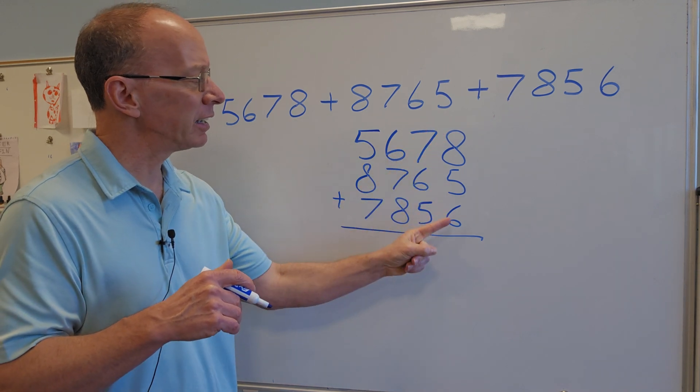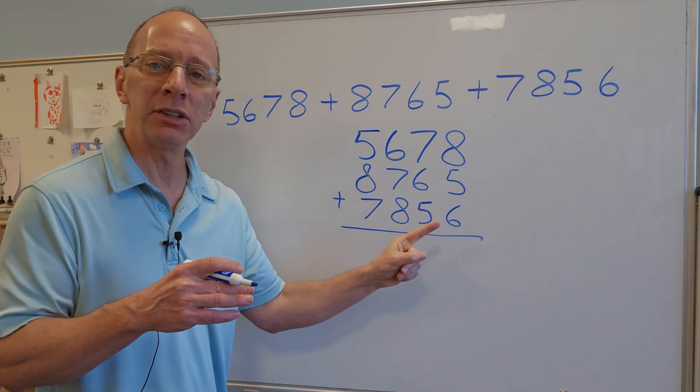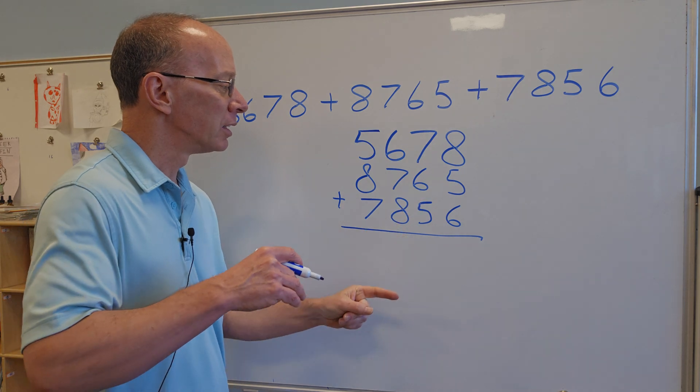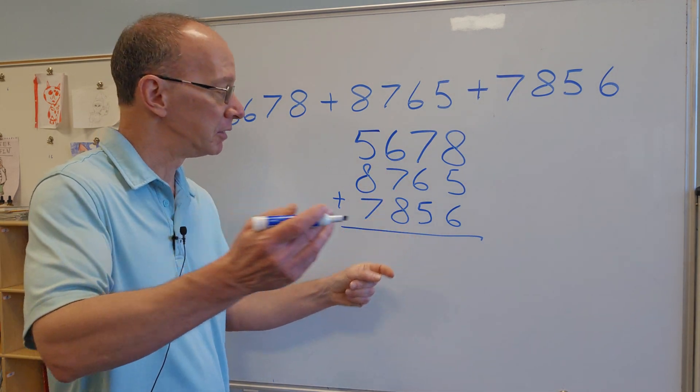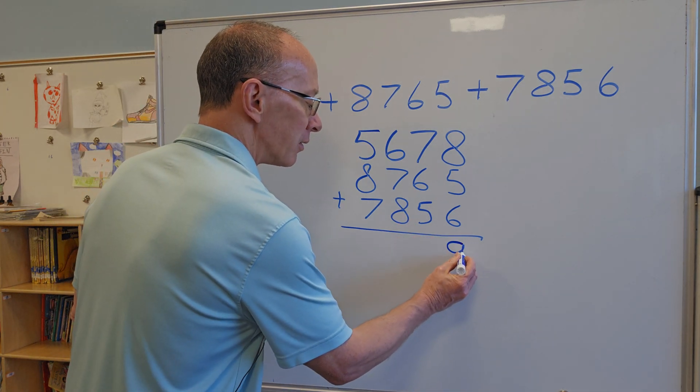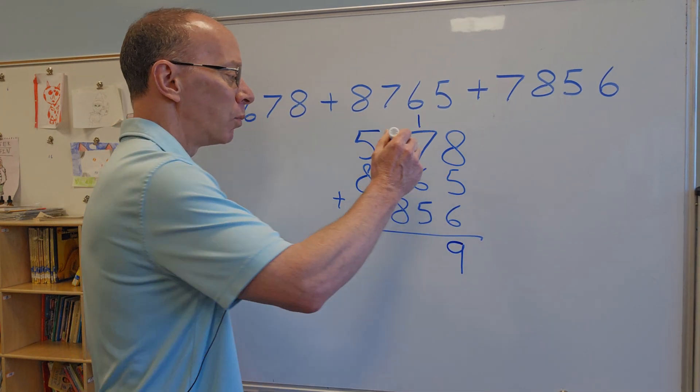So when I add numbers up, I'm always looking for an easy way to add those numbers. So right here I got 5 and 6 is 11, and 11 plus 8 would be 19. So I'll put the 9 right down here and carry the 1.